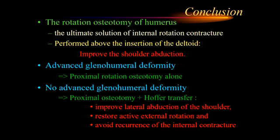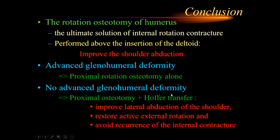Ultimately, the rotation osteotomy of the humerus remains the ultimate solution for internal rotation contracture of the shoulder. If the osteotomy is performed above the insertion of the deltoid, it constitutes the equivalent of a muscular transfer, improving the shoulder adduction. This osteotomy is performed alone if there is advanced glenohumeral deformity. Otherwise, and especially if there is co-contraction of the deltoid and shoulder adductors, we add the transfer to the proximal osteotomy. This would significantly improve shoulder adduction, restore active external rotation, and avoid recurrence of the internal contracture.